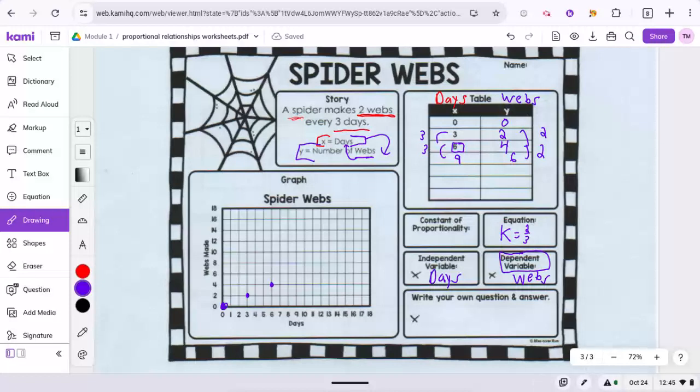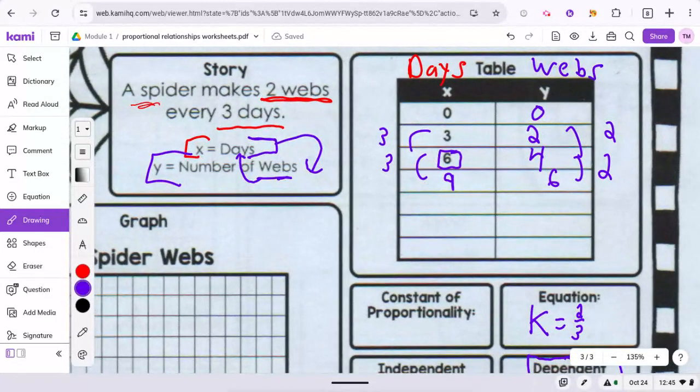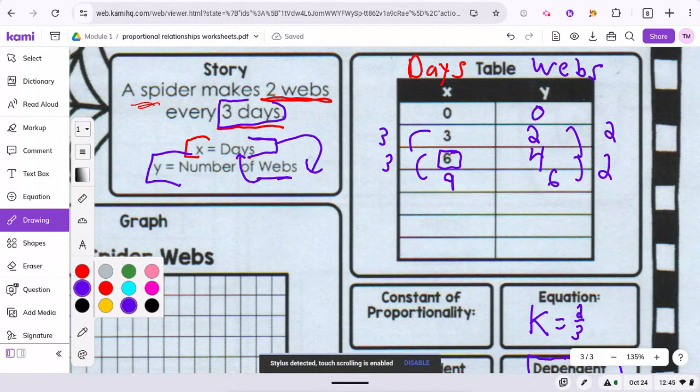We'll be finishing the worksheet with the constant of proportionality. We started this in class. So remember, as it shows here, it says for every three days, the spider makes two webs.